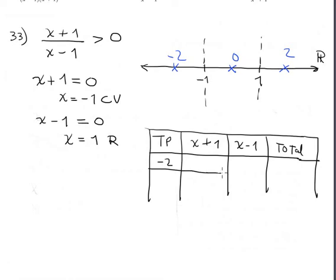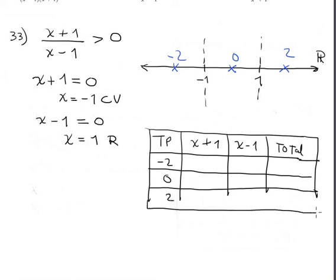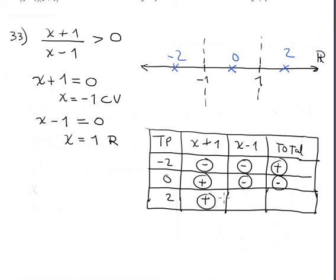The testing points are -2, 0, and 2. Evaluating at -2: numerator factor is minus, denominator is minus — minus divided by minus is positive. At 0: numerator is positive, denominator is minus, so the result is negative. At 2: numerator is positive and denominator is positive, so the result is positive. The true part is positive since it's greater than zero — so the true parts are the intervals containing -2 and +2.